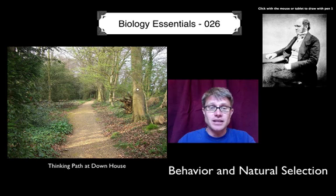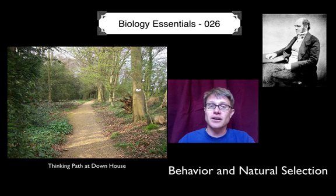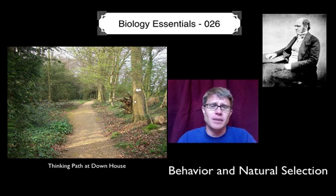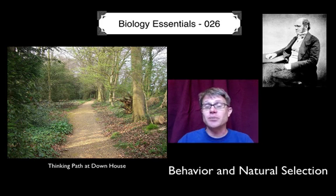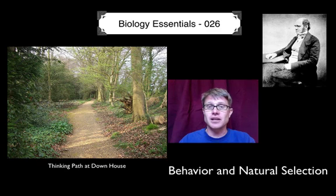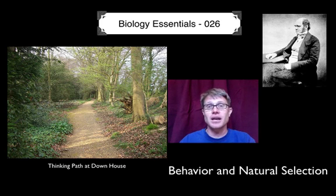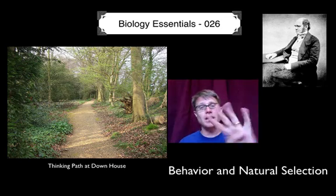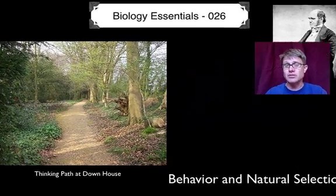At the time he was walking around that path, the whole peppered moth story — with the white color and the dark color — was going on in England. If he had actually been measuring, which nobody else was at that point, he could have gotten data to back up his theories. Today we measure natural selection everywhere: in the beaks of finches in the Galapagos, in the guppies of South America, and in HIV viruses. What I'm going to do in this video is talk about four types of behavior and how they affect natural selection.